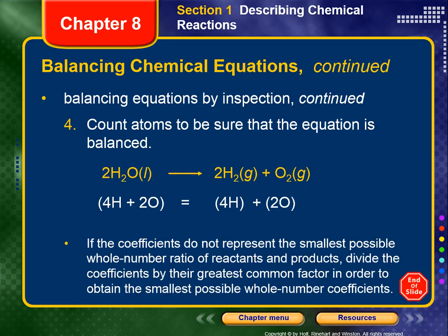Lastly, count the atoms to double-check. You should have the same number of hydrogens on both sides and the same number of oxygens on both sides of the reaction arrow. If the coefficients do not represent the smallest possible whole number ratio, divide them by their greatest common factor to obtain the smallest possible whole number coefficients.